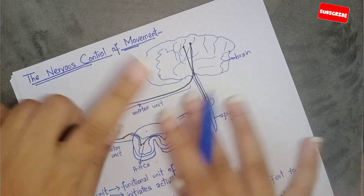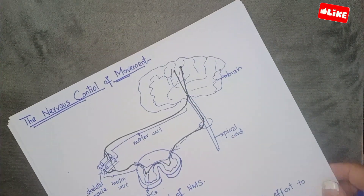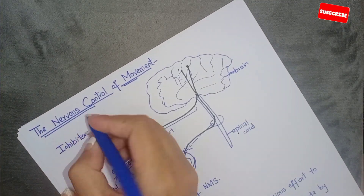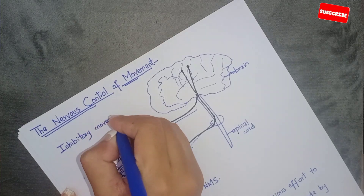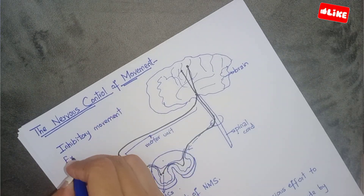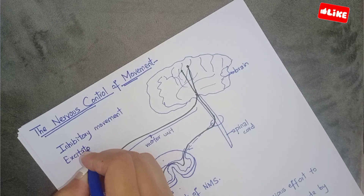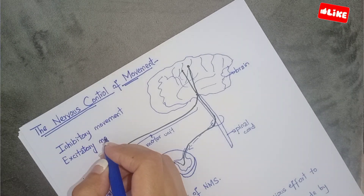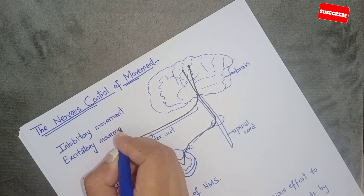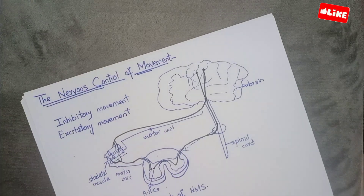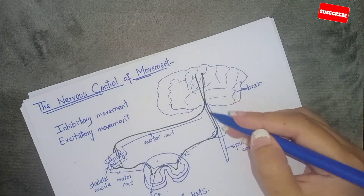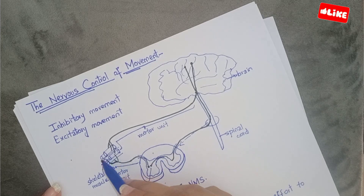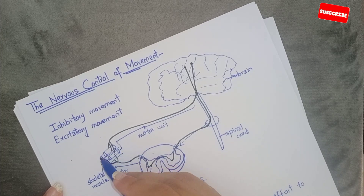I'm going to explain the details from this diagram. We will have two types of movements: inhibitory movement and excitatory movement. I have made a diagram showing a brain and a spinal cord — a small part of the spinal cord — along with a small part of the skeletal muscles and the fibers.